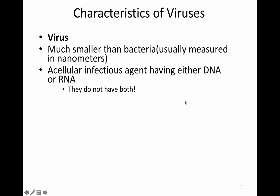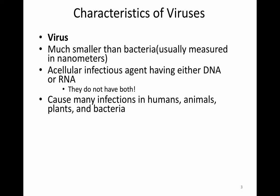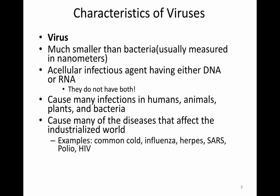These acellular infectious agents have either DNA or RNA — they do not contain both. This is actually a non-living characteristic. They use that DNA or RNA as their genetic material or genome. They cause many infections in humans, animals, plants, and even bacteria, and cause many of the diseases that affect humans in our industrialized world. Examples include the common cold, influenza, herpes, SARS, polio, and HIV.